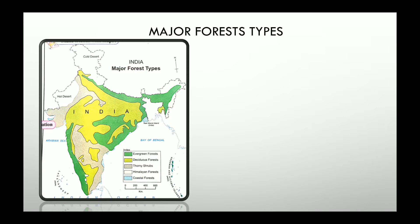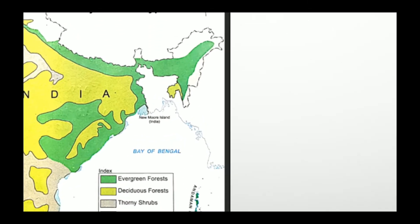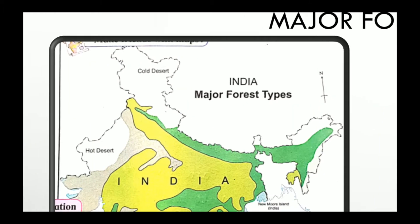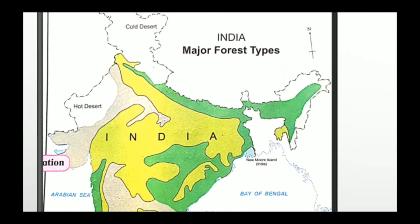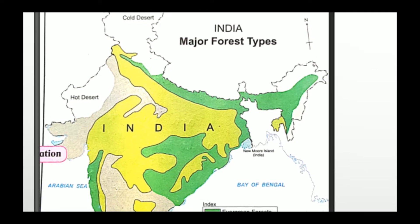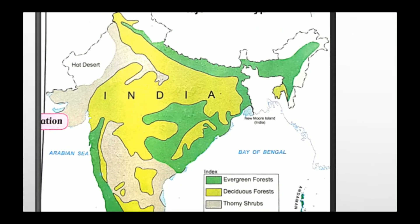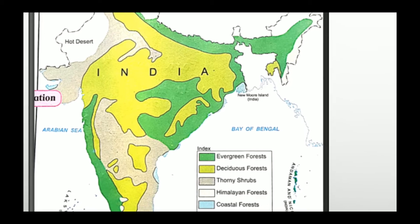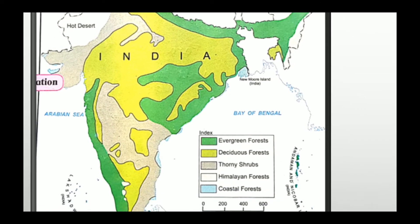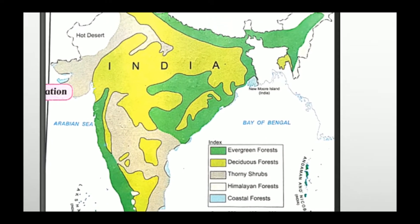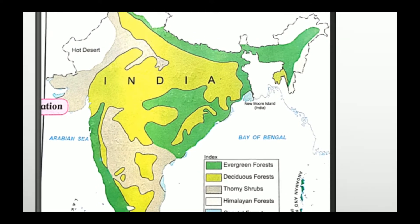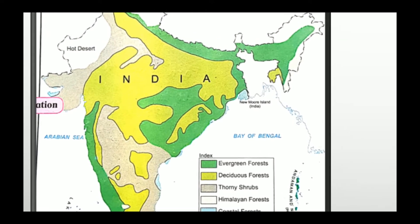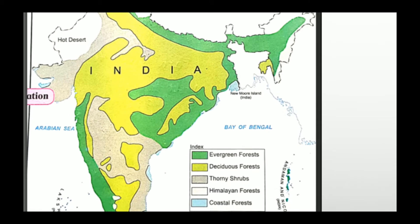The one which we can see in the dark green color is the evergreen forest. Evergreen forest is found in the northern part of India, also in the northeastern part, Western Ghats, some parts of the eastern coastal areas, and Andaman and Nicobar Islands.